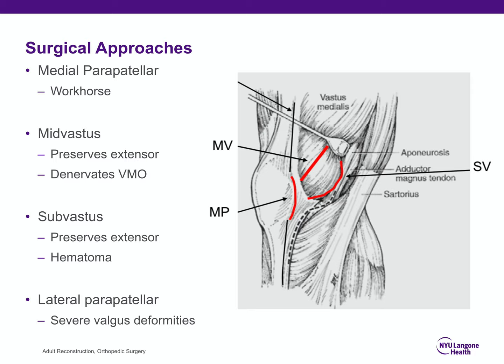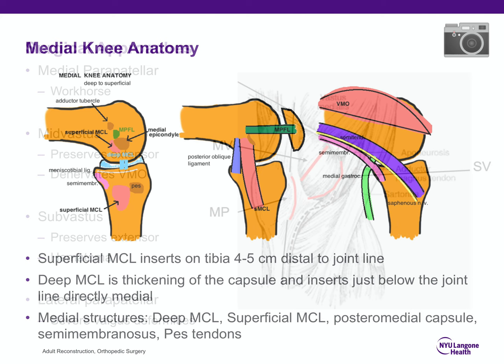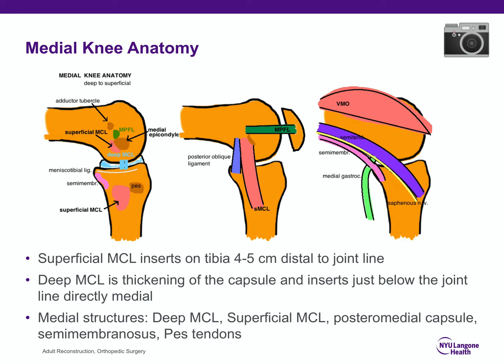For surgical approaches in primary knees, the workhorse is the medial parapatellar approach. The mid-vastus approach preserves the extensor but denervates the VMO. The sub-vastus approach, rarely used, preserves the extensor but causes additional hematoma and is harder to expose. A lateral parapatellar approach has been described for severe valgus deformities. For medial knee anatomy: the superficial MCL inserts 4–5 cm distal to the joint line; the deep MCL (meniscotibial ligament) is just below the joint line. Medial structures available for release include the deep MCL, superficial MCL, posteromedial capsule, semimembranosus, and pes tendons.